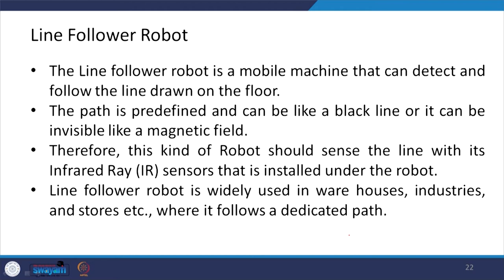The line follower robot is a mobile machine that can detect and follow a line drawn on the floor. The path is predefined and can be a visible black line or an invisible path like a magnetic field. The robot senses the line using IR (infrared) sensors installed underneath it. Line follower robots are widely used in warehouses, industries, and stores where they follow a dedicated path.